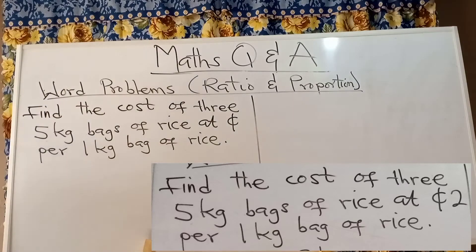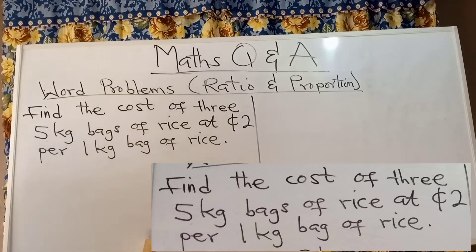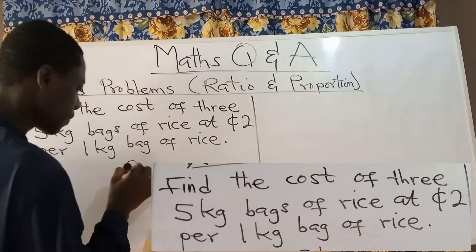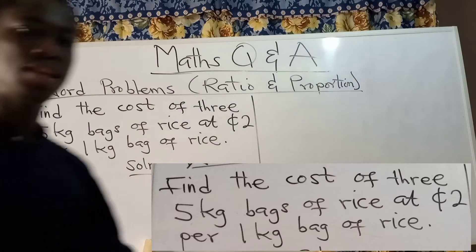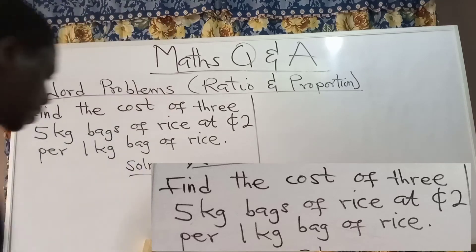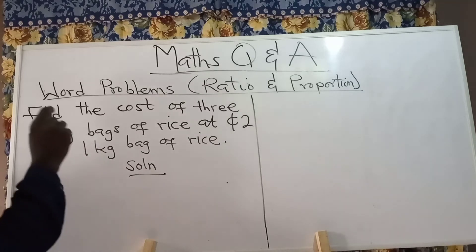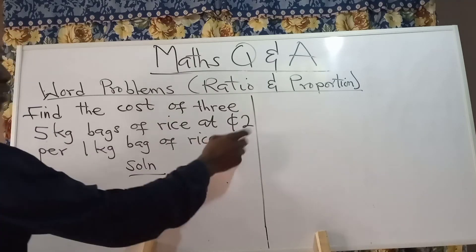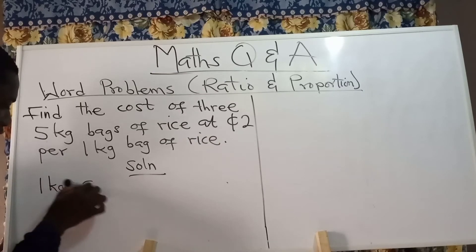You have to find the cost of three five kg bags of rice at two cities per one kg of rice. In order to solve a question like this, as I've already said in previous videos, you first have to put down the data. So let's figure out the data from this question — it is going to guide us to solve it very simply. In the question, one kg bag of rice costs two cities. So one kg is equal to two cities.